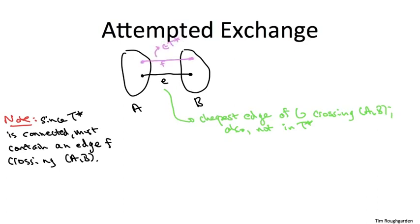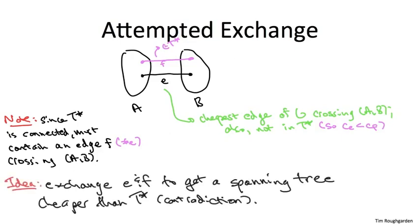Now, of course, since E is the cheapest edge crossing this cut and F is some other edge crossing this cut, F is strictly more expensive than E. And at this point, we seem beautifully set up to execute the desired exchange argument. We have the edge that the optimal solution is missing. We have a candidate replacement edge F, which is more expensive. So, if we swap E and F, hopefully we get a new spanning tree that has strictly smaller cost, providing the desired contradiction.